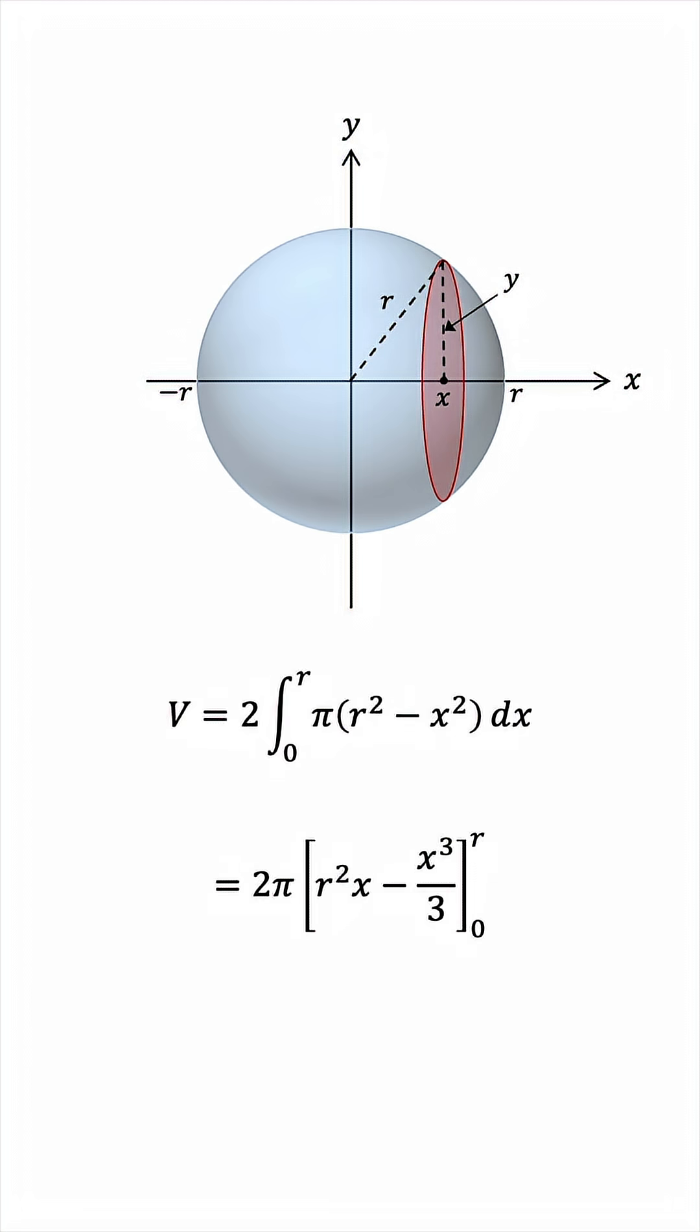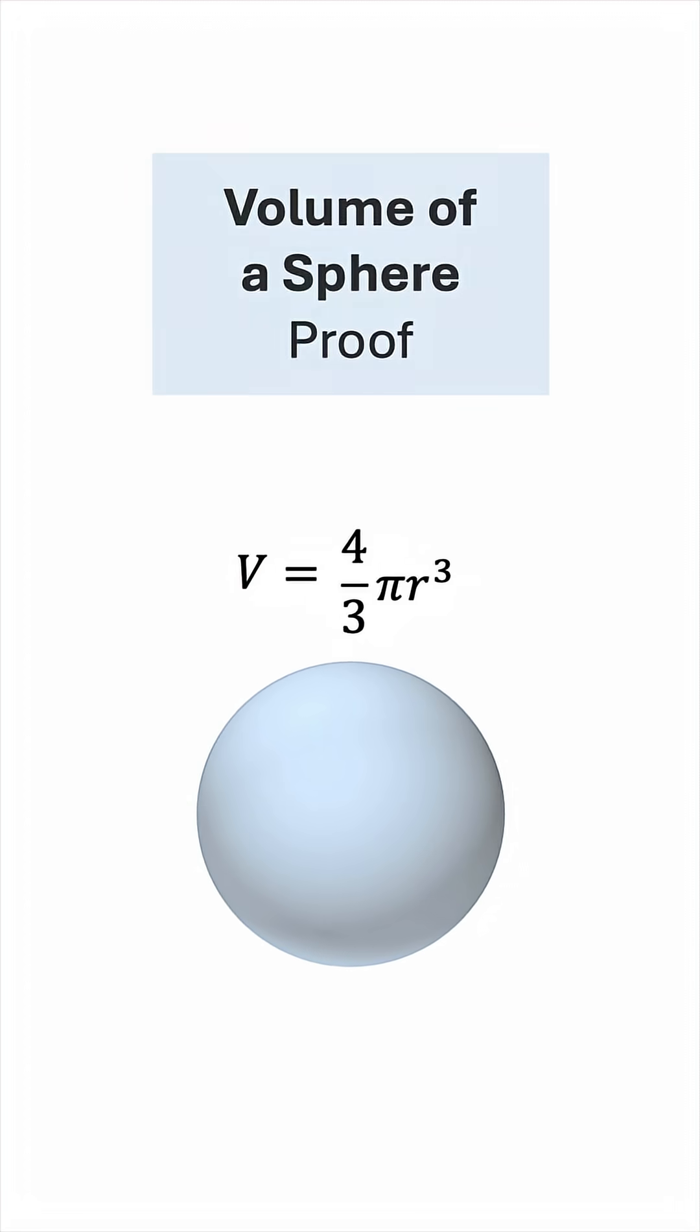The lower bound is 0, so all we have to do is plug in r into the antiderivative, giving us r cubed minus r cubed over 3, which is 2r cubed over 3, giving us 4 over 3 pi r cubed. There you have it.